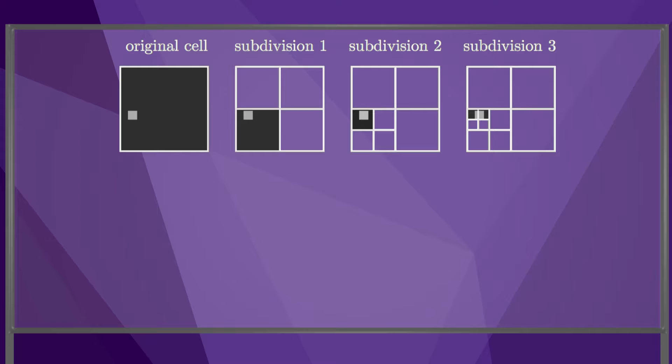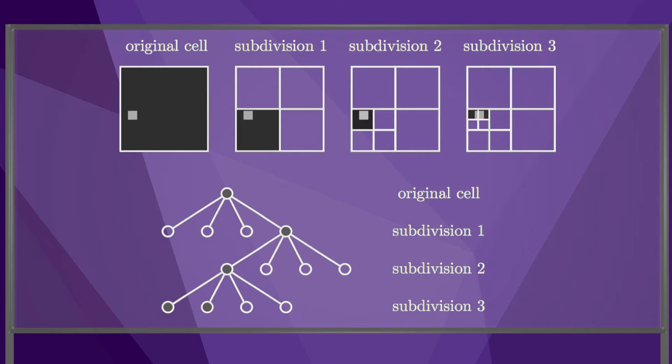The ten leaves of the tree are the final cells in our representation, and two of those cells, colored gray, are in collision. If we had used a fixed resolution grid, we would have needed 64 cells to achieve the same level of resolution.